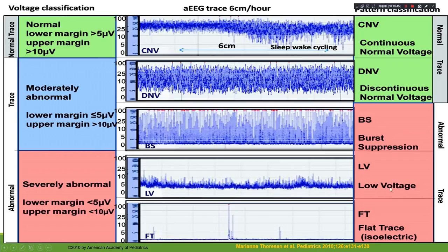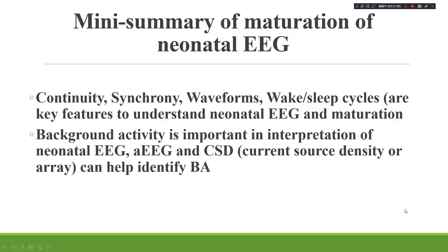Very low voltage EEG is severely abnormal, with average voltage below 5 microvolts — sometimes close to 2, approaching ECI pattern at 0 to 2 microvolts. These AEEG amplitude parameters provide a reference for grading the severity of EEG background abnormality.